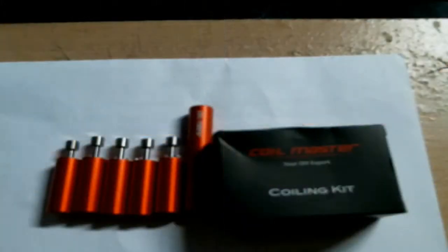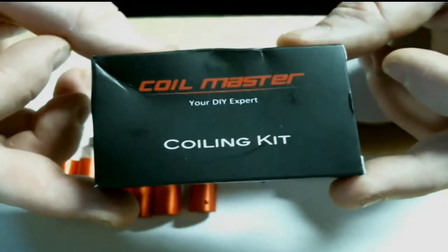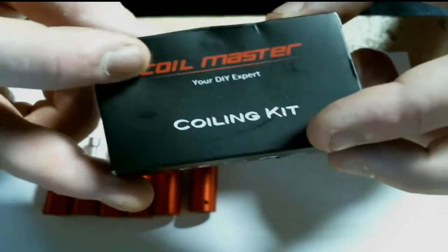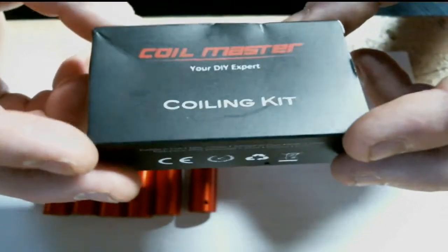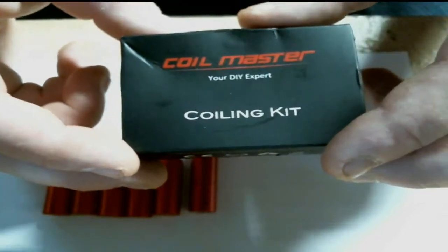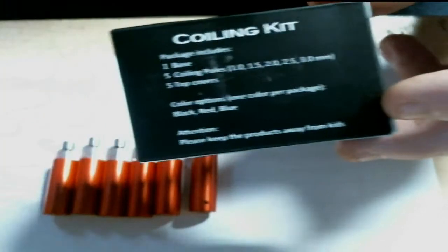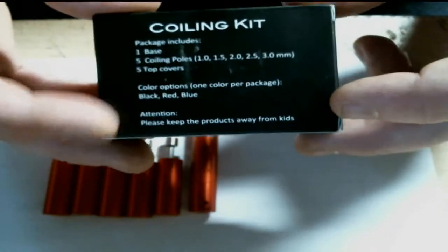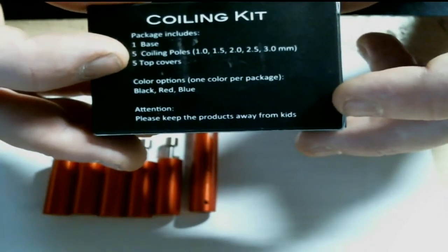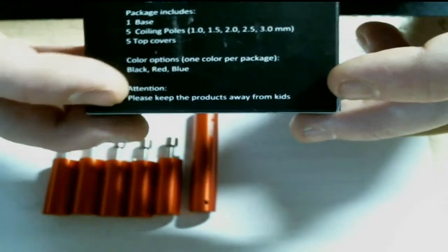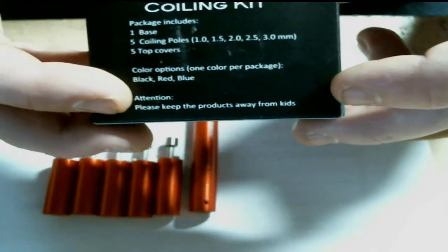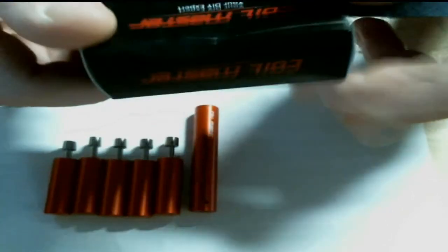So this is the box that it comes in. Mine's a little crushed up here because I accidentally hit it the other day and almost stepped on it before I got a chance to do the review. Look on the back side, it tells you everything that you're going to get in it and all your coil sizes right here. And of course, always keep all your vape gear out of the hands of children. The box came very nicely packaged, everything was individually wrapped.